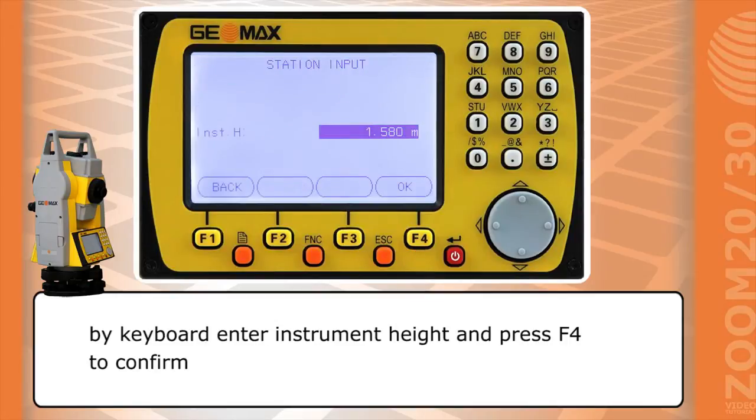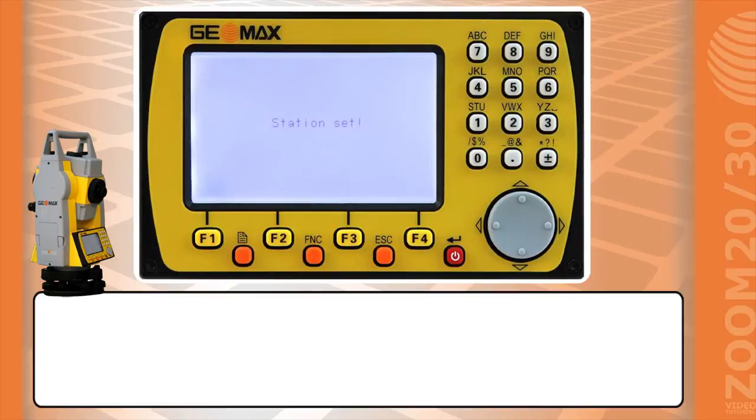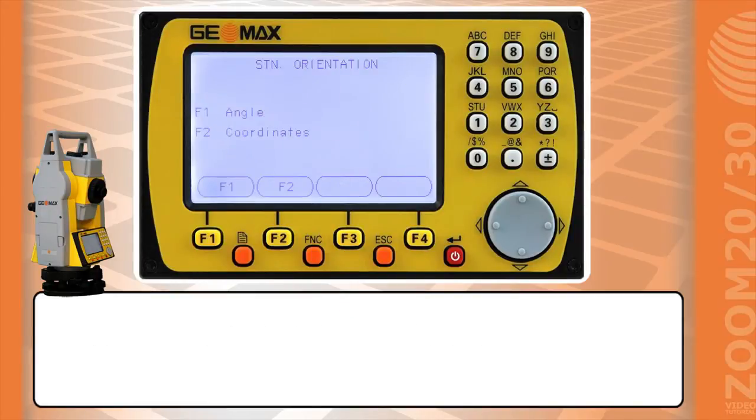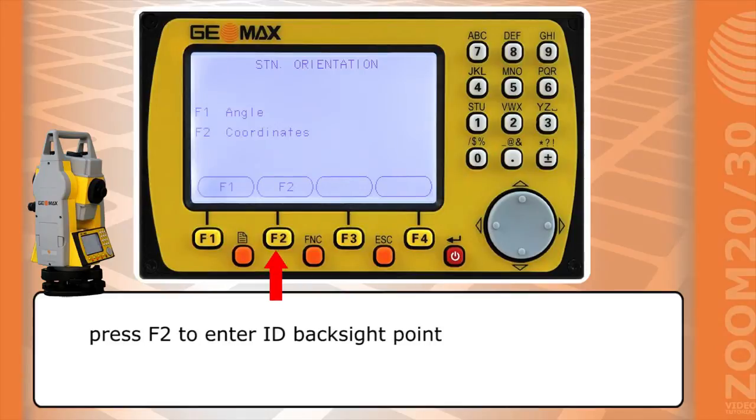By keyboard enter instrument height and press F4 to confirm. Press F3 to set orientation. Press F2 to enter the backside point.